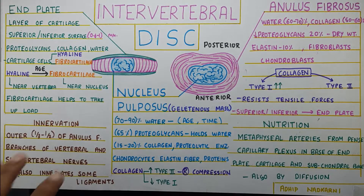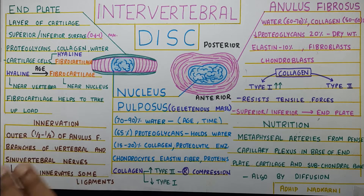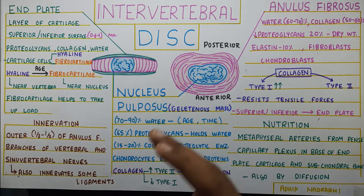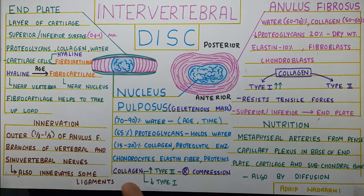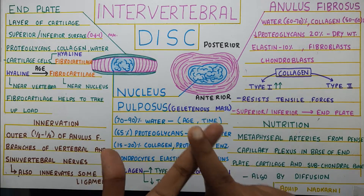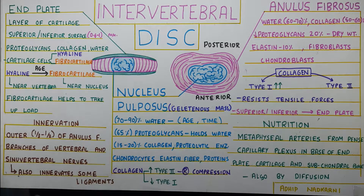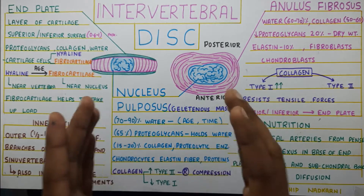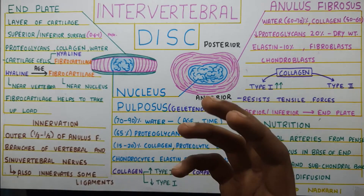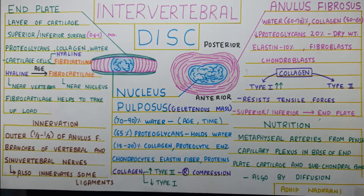For innervation, the outer one-third to half of the annulus fibrosus has branches of the vertebral and sino-vertebral nerves. These same nerves also innervate the ligaments around the disc.